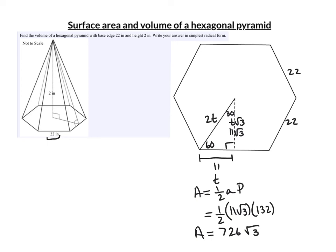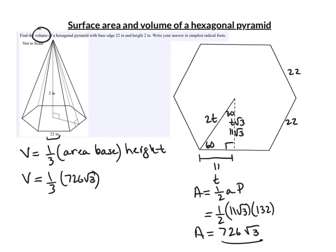Now we're finding the volume on this question. And the volume of the pyramid is one third the area of the base times the height. So our volume would be one third. We found the area of the base right there. 726 root 3 times the height, which is 2.